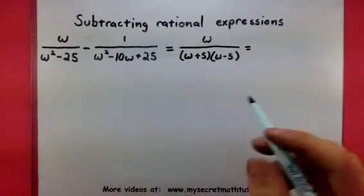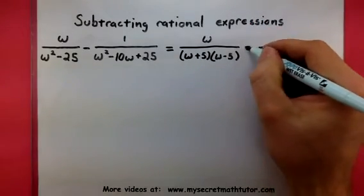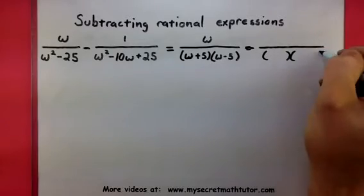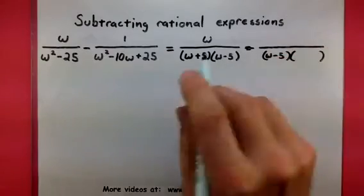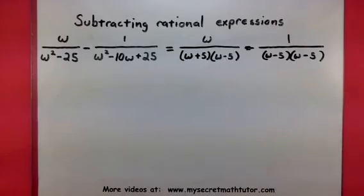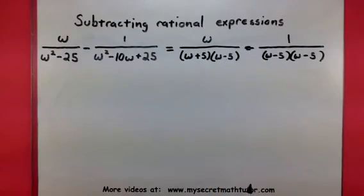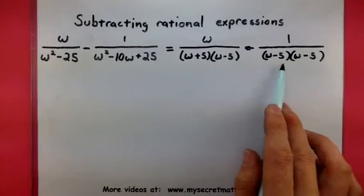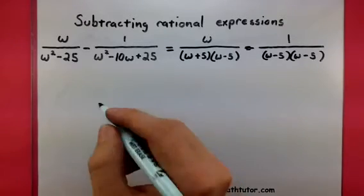If we look at the other rational expression and look at its denominator, it will also factor. Let's see what we have here. So w minus 5 and looks like another w minus 5. Alright, so things are looking pretty good. And now I can start to identify a common denominator. So it looks like they both have a w minus 5 in common. But this one has a w plus 5 and this one has another w minus 5. So I need to give them the same denominator.